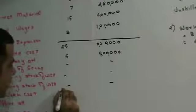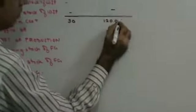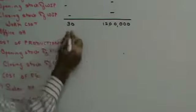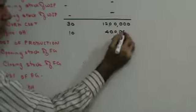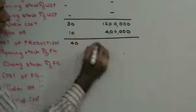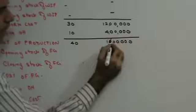There is no sale of scrap, WIP opening or closing stock given. So work cost CPU becomes 30 and work cost PC becomes 12 lakhs. Office overheads is 1/3 of work cost: 1/3 of 30 is 10 (CPU) and 1/3 of 12 lakhs is 4 lakhs (PC). So cost of production is 40 CPU and 16 lakhs PC.